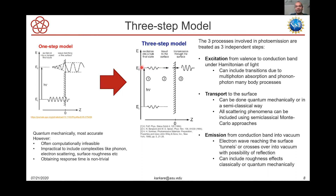The next step is transport: once electrons are excited into a higher energy state they move through the crystal, and once they hit the surface they can be emitted. Transport can be modeled quantum mechanically or semi-classically. In the semi-classical approach you can incorporate scattering mechanisms — electrons scattering with phonons, other electrons, or charge carriers — which cause them to lose energy or change momentum during transport towards the surface, having a big impact on emission. The final step is emission itself: electrons that reach the surface are either emitted into vacuum or reflected, as it is a quantum mechanical transition.